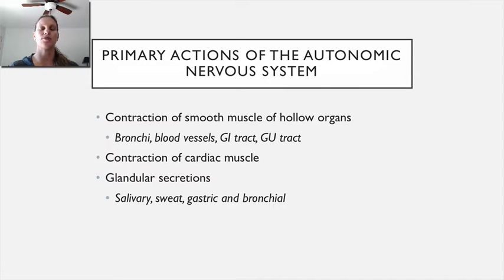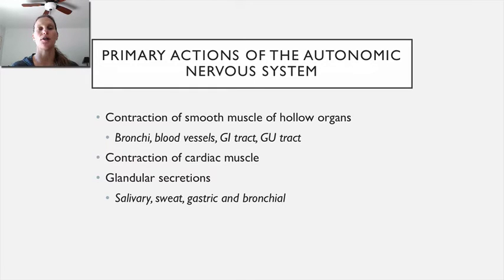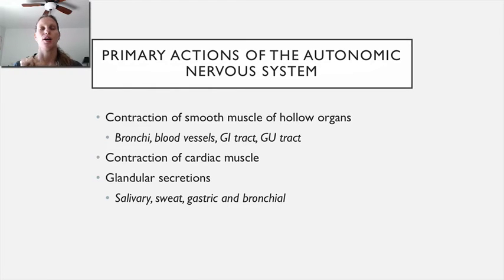Even when we're not specifically trying to affect those systems, because the autonomic nervous system is so far-reaching, a lot of medication side effects are seen in those systems. For example, if you use an autonomic nervous system drug to affect the cardiovascular system, chances are you'd also see side effects in the respiratory, genitourinary, and GI systems.